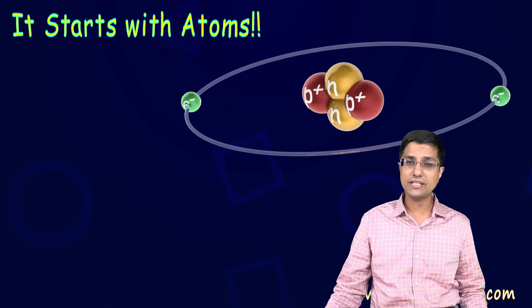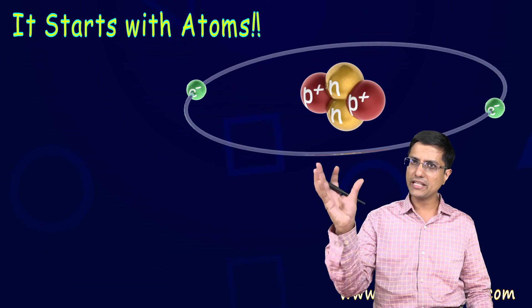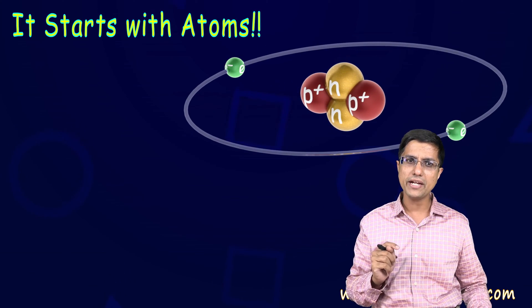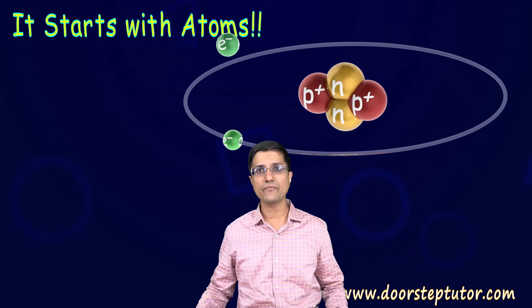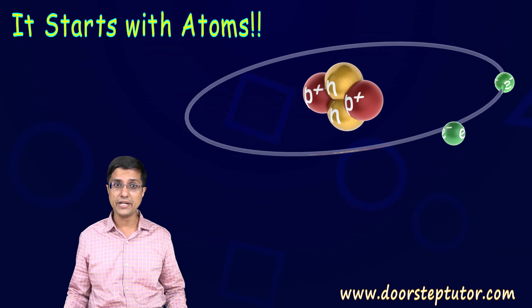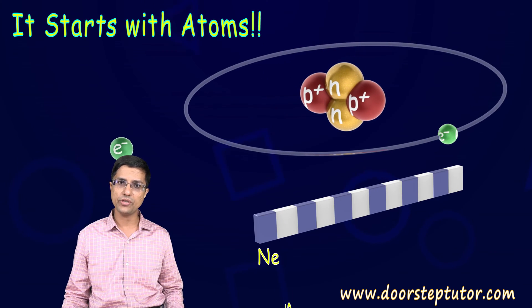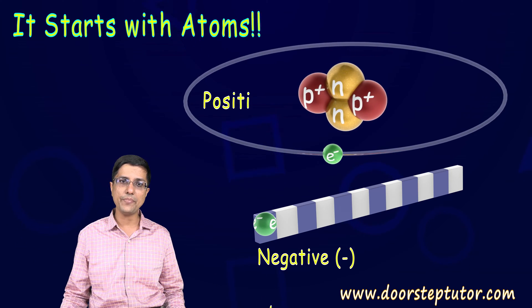Sometimes however, what happens is we can excite these electrons. There is a nucleus here and this electron is going around. What I can do is that I can provide extra energy to this electron and it would just fly away. Now I have really separated the electron.